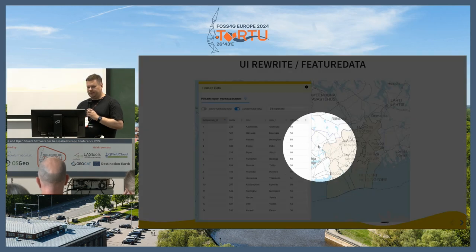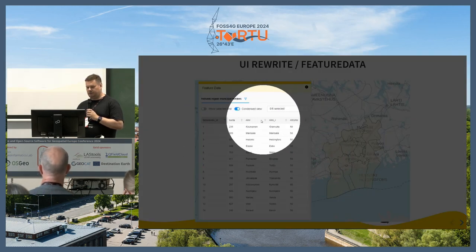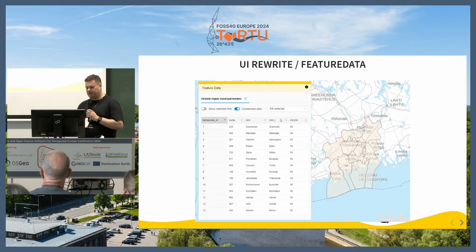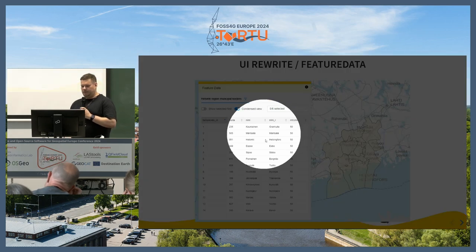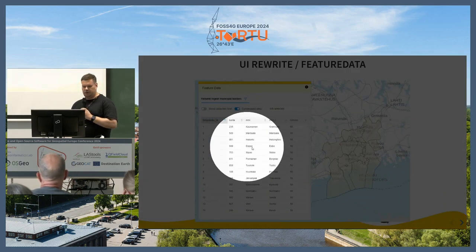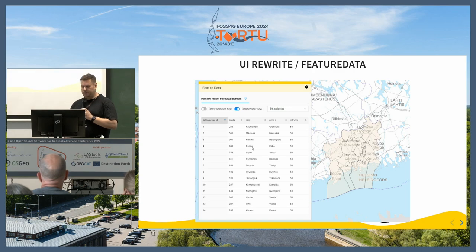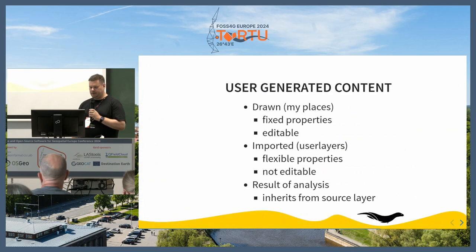Here's an example where that hasn't been configured — these are non-user-friendly names for the properties. This is showing vector data where for all of these features you have the properties displayed in an object data table.